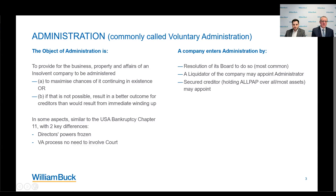How does a company get to administration? Most commonly by the board — the board resolves to appoint an administrator. The resolution generally reads: the company is, or is likely to become, insolvent, and therefore the board resolves to place the company into administration. A liquidator of the company may also appoint an administrator if in liquidation and a restructuring is proposed. Or a secured creditor, where they hold an PPSA security over all or predominantly all of the assets, may appoint an administrator. But the most common is certainly the board itself.